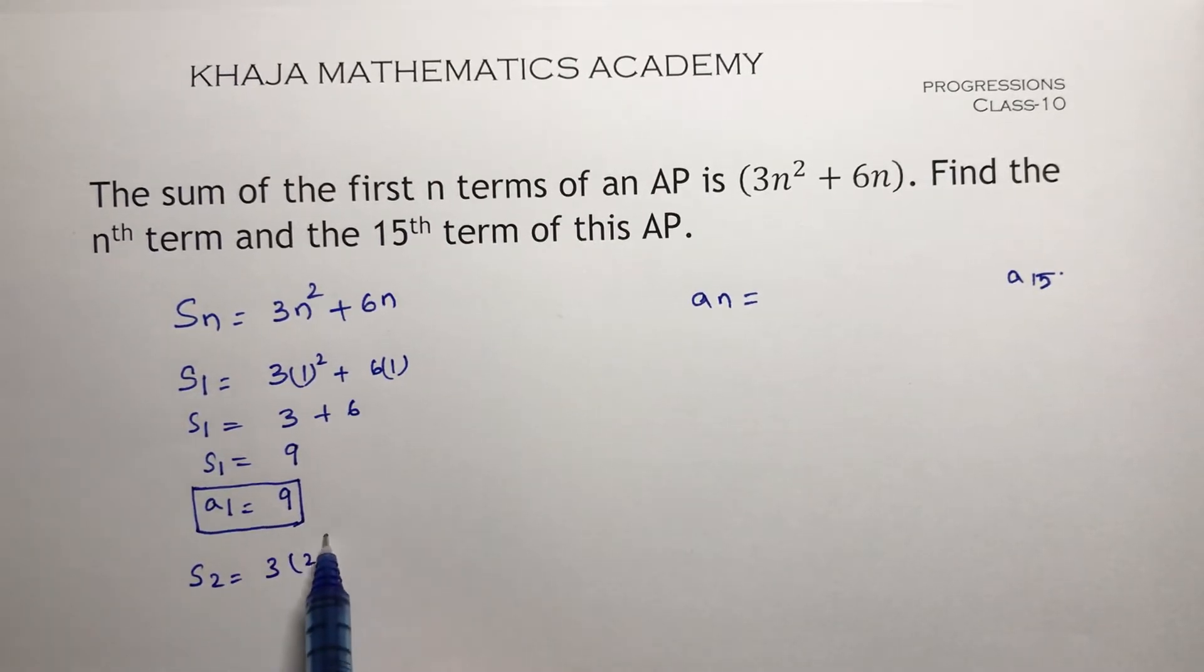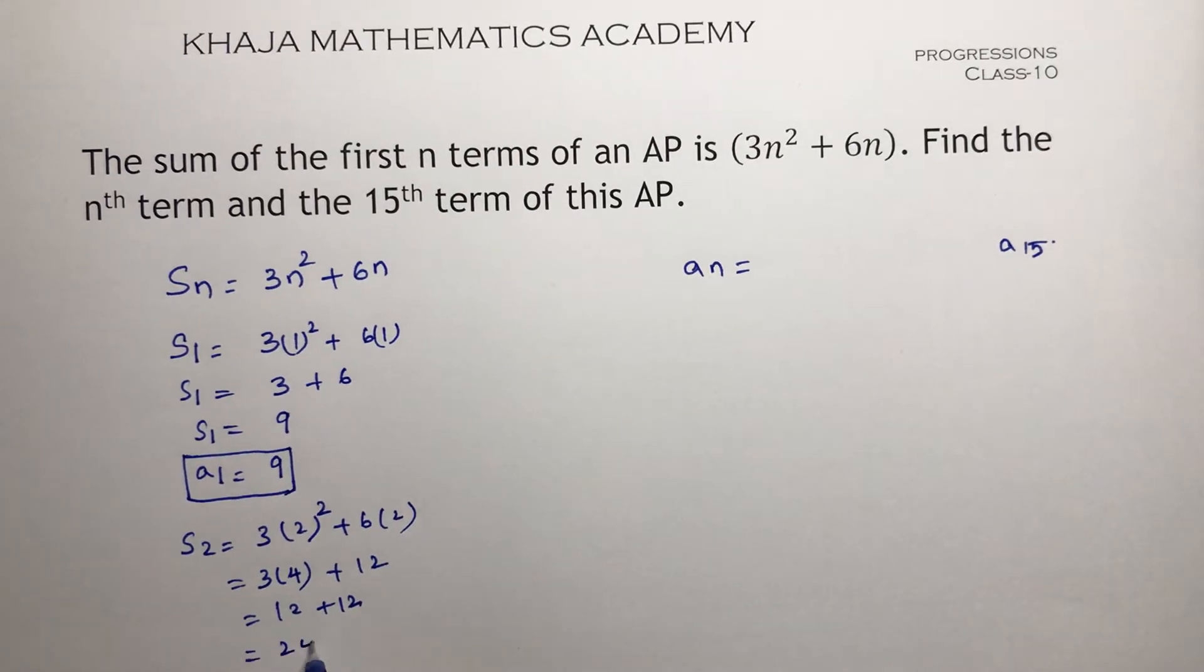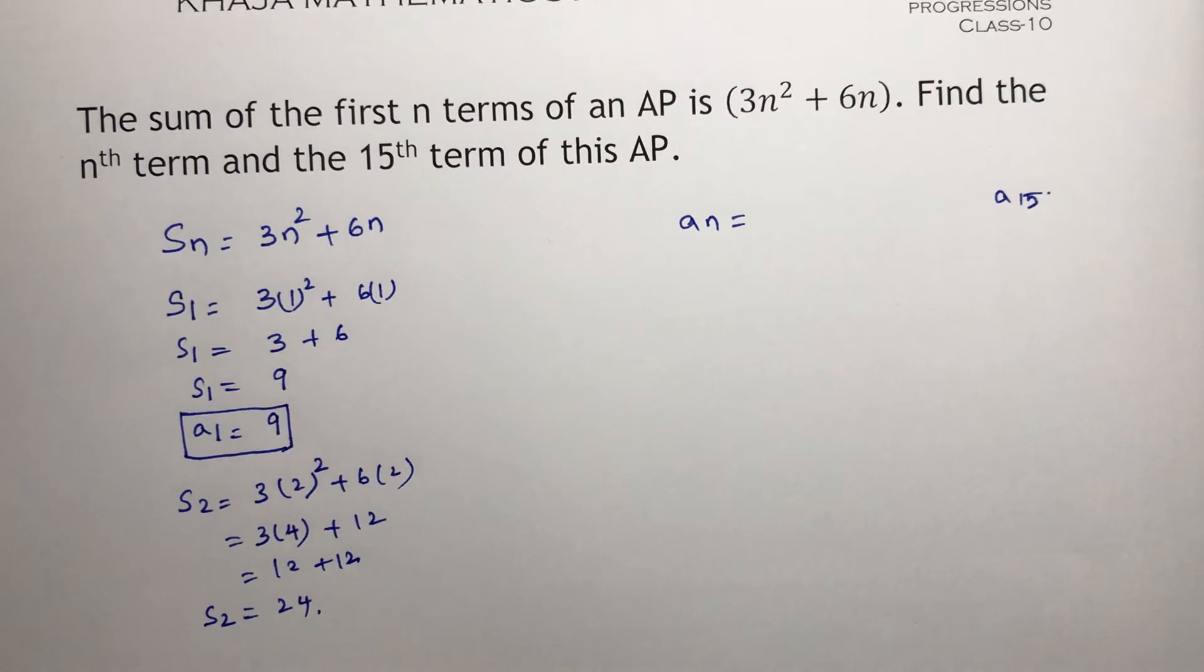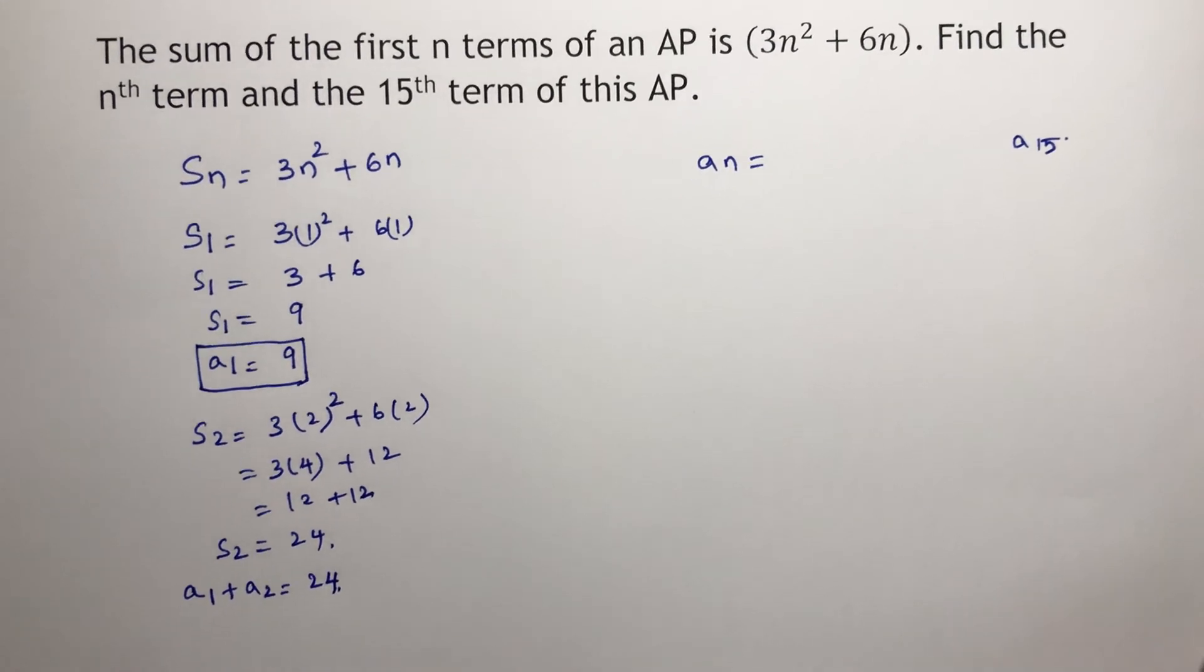3 into 2² plus 6 into 2. 3 into 2² is 3 into 4, which is 12, plus 6 into 2 is 12. 12 plus 12 which is nothing but 24. So here this is S_2. S_2 is nothing but the sum of two terms, that is A_1 plus A_2 is 24.